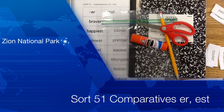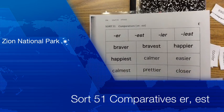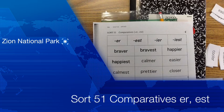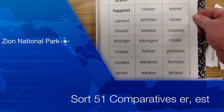Okay, let's go ahead and begin. Let's take a look at this week's spelling words. This is SORT 51 and it deals with comparatives and words that compare. They end in ER and EST. There are your words.